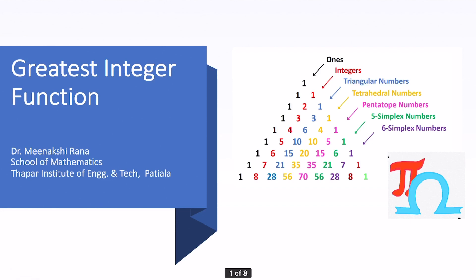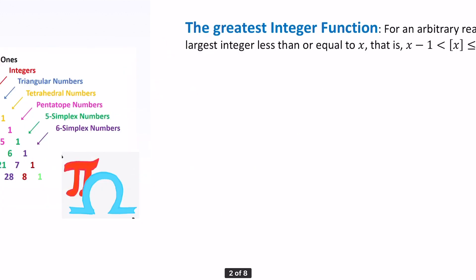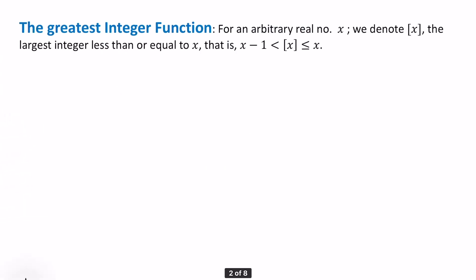In this video we will be talking about the greatest integer function. For an arbitrary real number x, we denote the greatest integer function with square brackets. It is the largest integer less than or equal to x — that is, x minus 1 is strictly less than the greatest integer of x, which is less than or equal to x. This equality holds if and only if x is an integer.